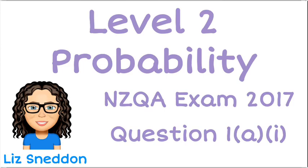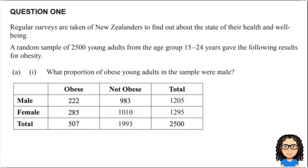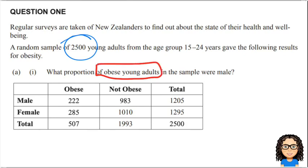Here's question 1a part 1. So here's our question. We've been told about a survey done and they've got a random sample of 2,500 adults. We've got the table down below. So let's have a look at the wording of the question: what proportion of obese young adults in the sample were male?